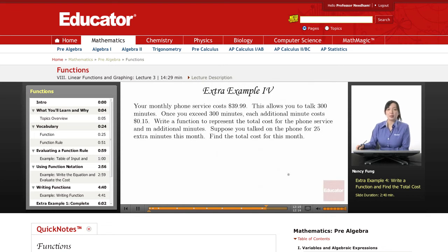Like the previous problem, we're going to create a function notation, an equation that represents the relationship between the number of minutes talked and the total cost. Once we've found that equation, we're going to substitute 25 for the input. Let's start with the equation first.